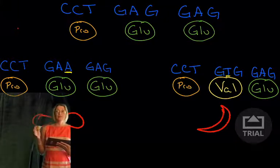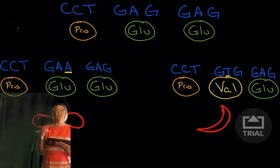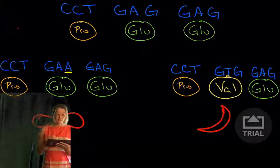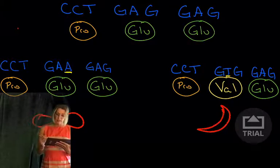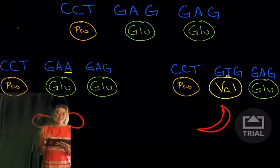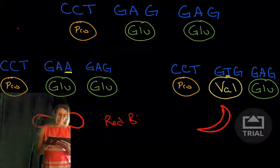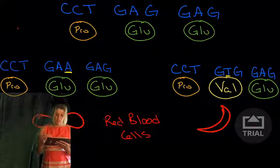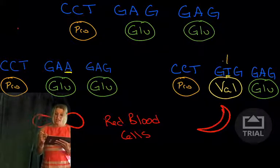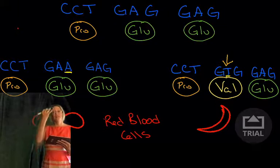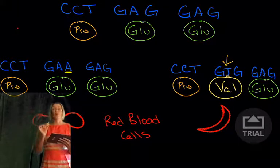Over on the right, instead of changing the last base in the triplet, we change from GAG to GTG. This one change, this single change, leads to sickle cell anemia. You see this sort of sickle shape, these little red things at the bottom, these are red blood cells. In this beta hemoglobin gene, this one change here leads to sickle cell anemia. That's a really cool example.